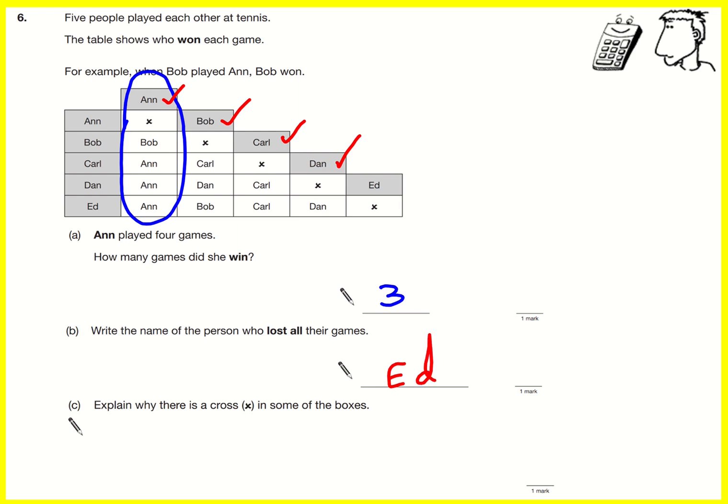Explain why there's a cross in some of the boxes. If let's look at this one here. For there to be a name here Dan would have to play against Dan in this situation and that's impossible. So players cannot play against themselves.